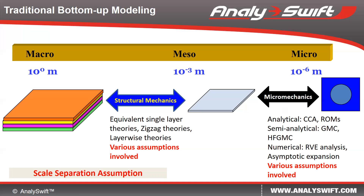However, it will create difficulty for predicting the local strengths and failures at the smaller scales. If there is no clear scale difference, such as in honeycomb sandwich structures, then the scale separation assumption will not work even for the global responses.